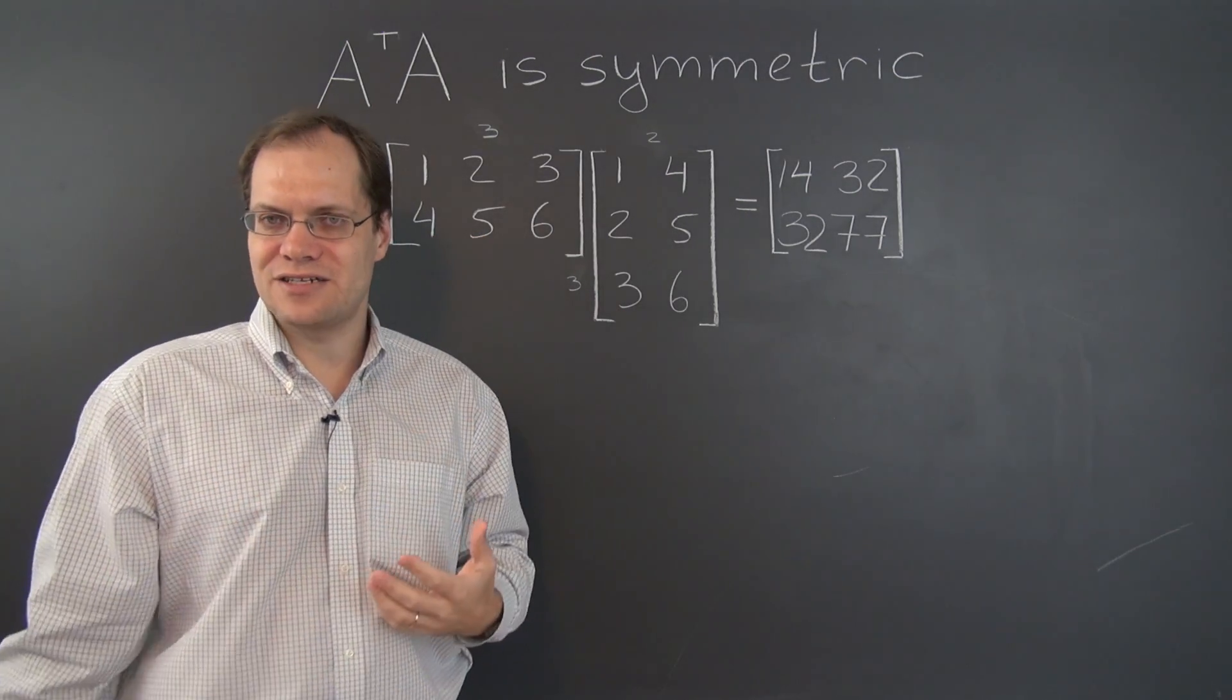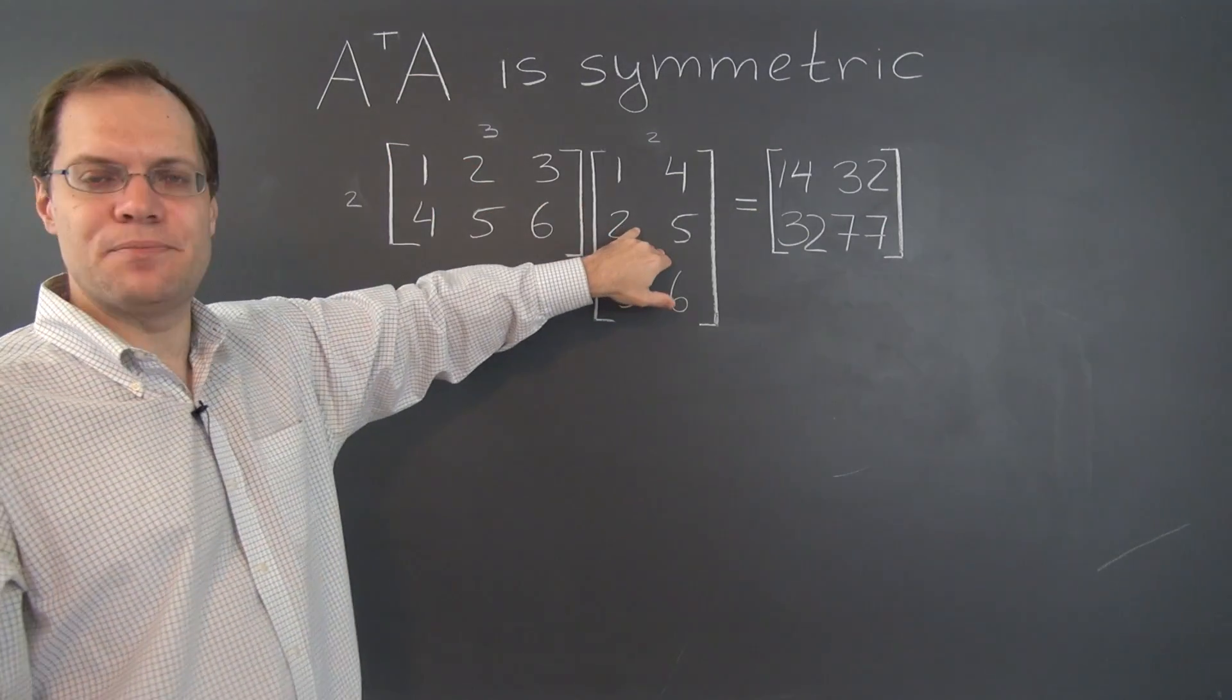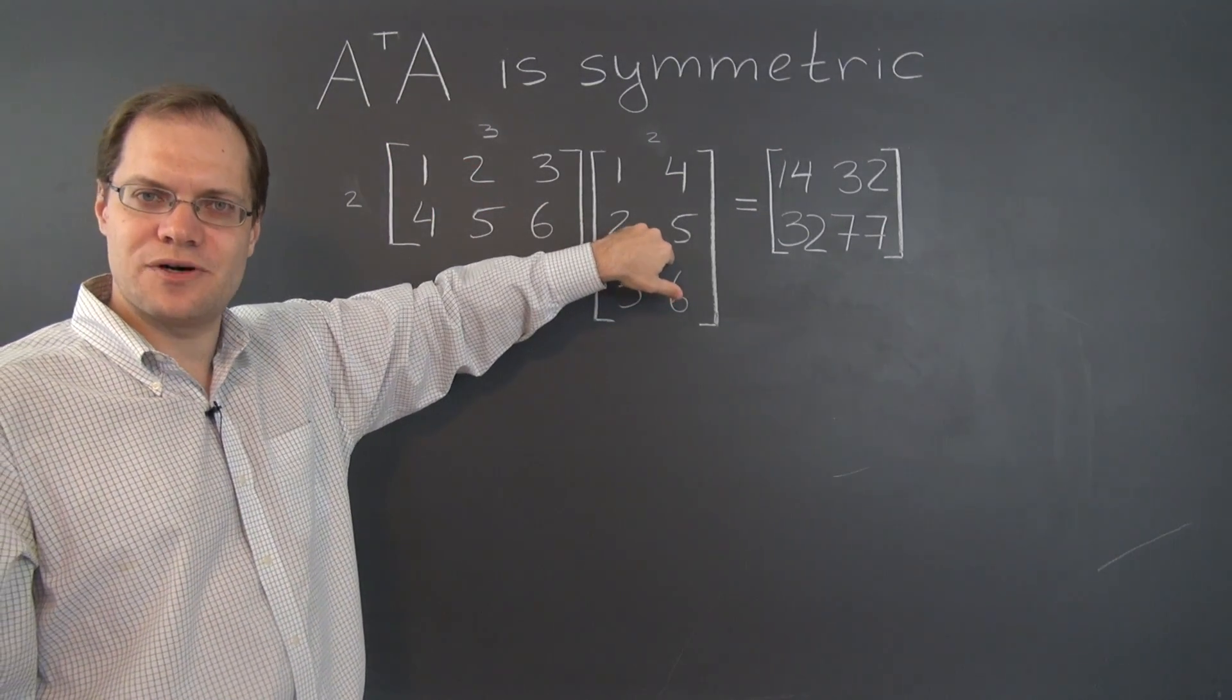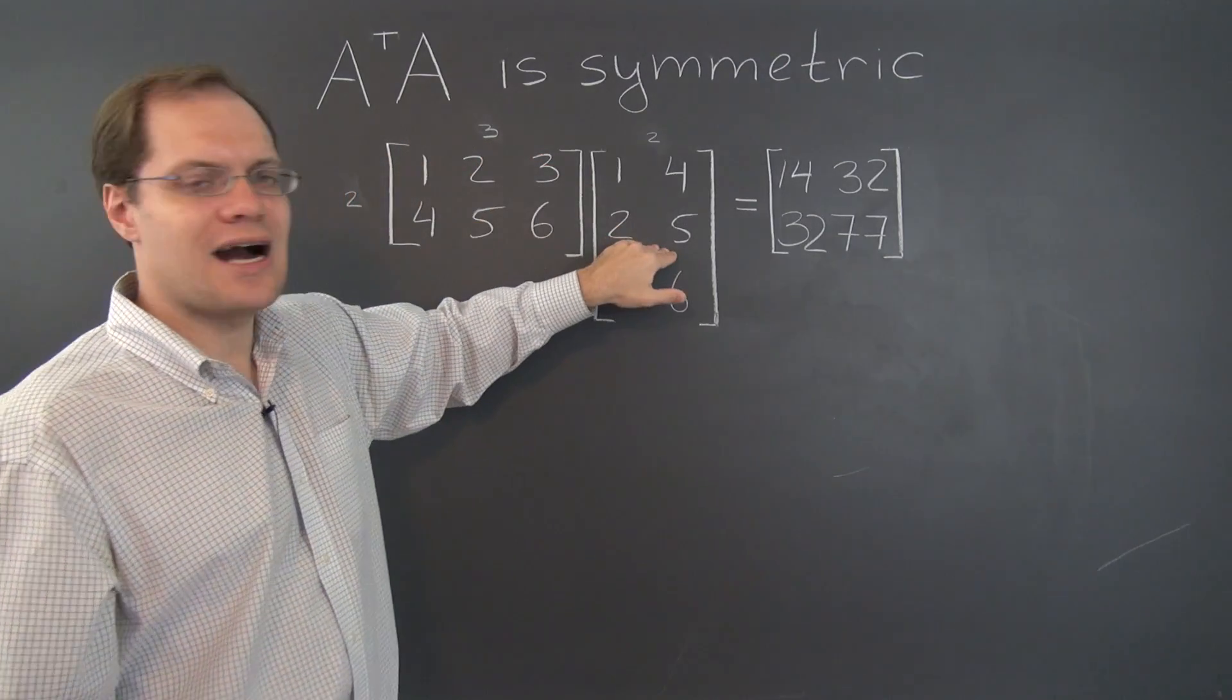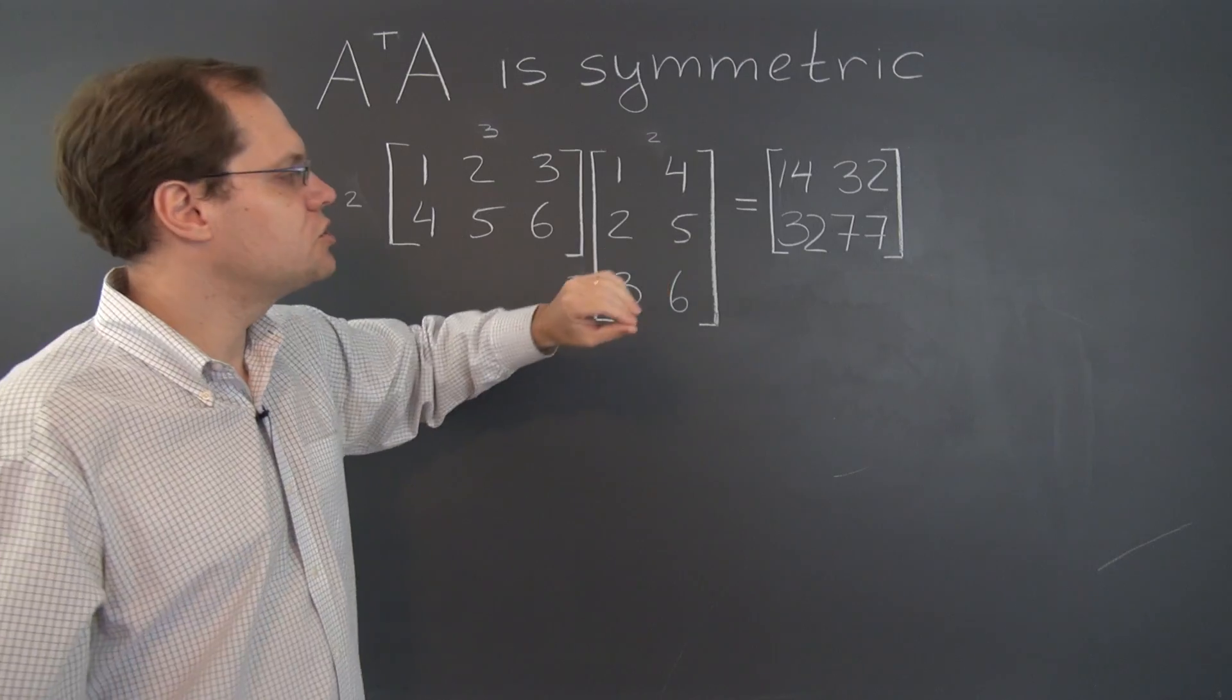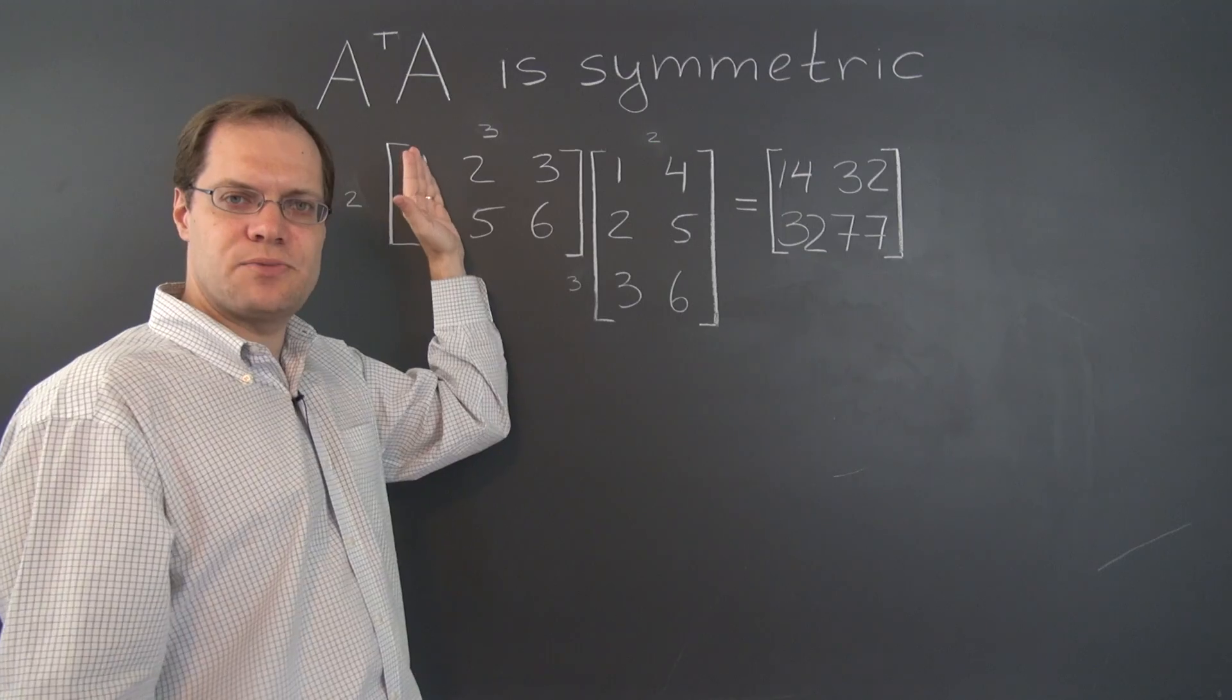But those were the same vectors. Why? Precisely because this matrix is the flip of this one. It's the transpose of this one. So the rows of this matrix equal the columns of this matrix. So in describing where these entries came from, we don't even have to look at A transpose.